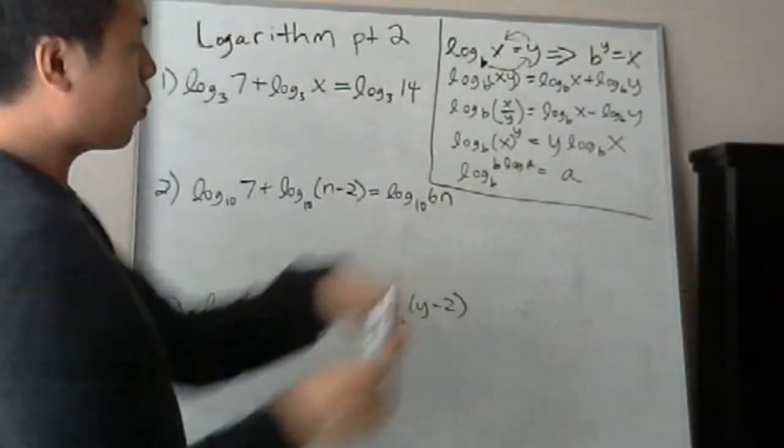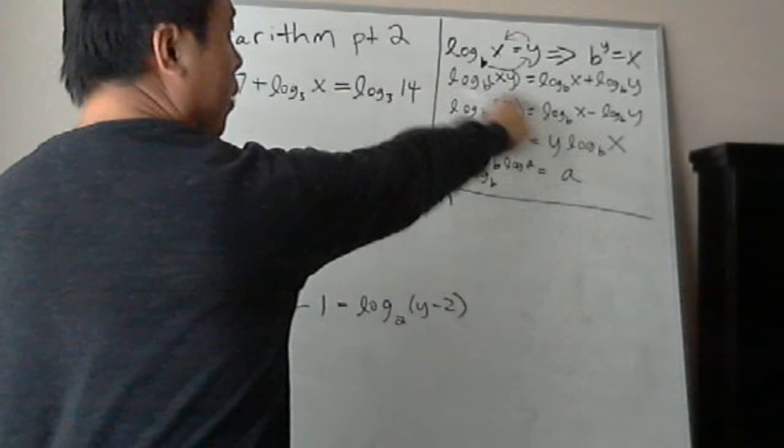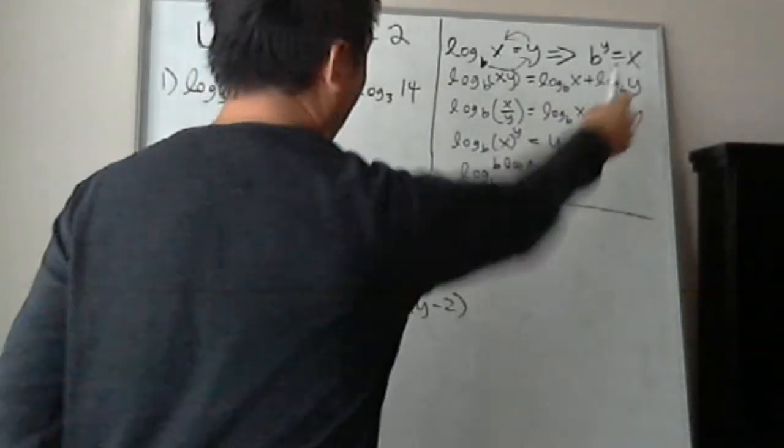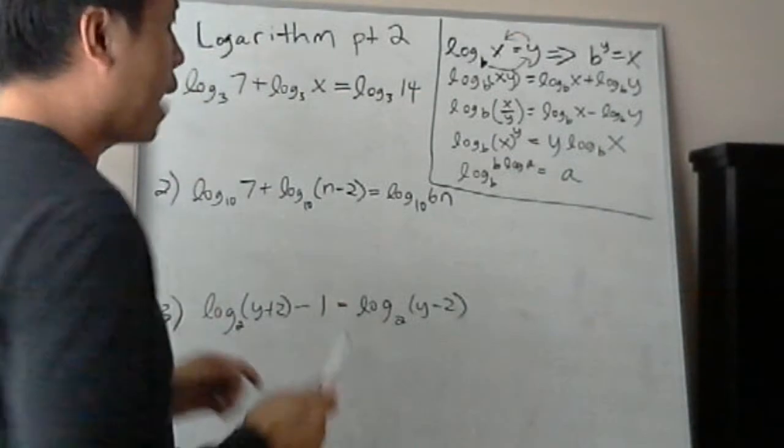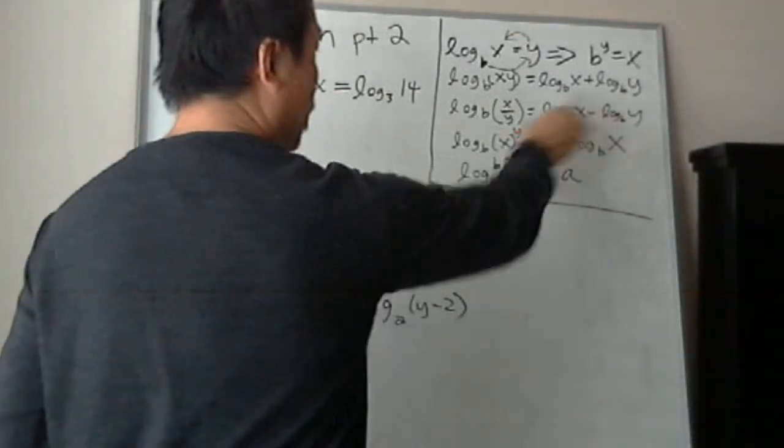I'm going to discuss the next theorem, which is log base b, and you have x times y inside here, equals to log base b x plus log base b y. And a lot of problems we have when you solve them with logarithms, you like to group them together.